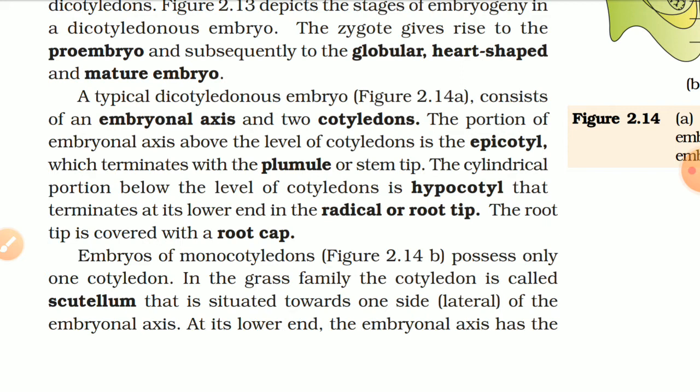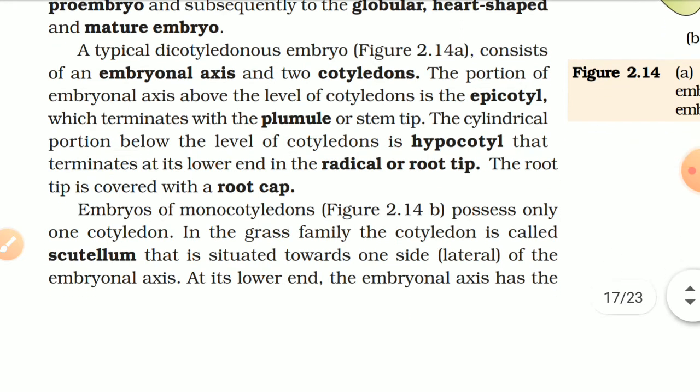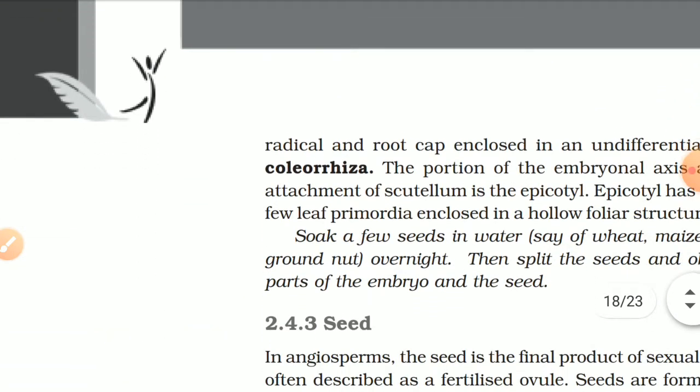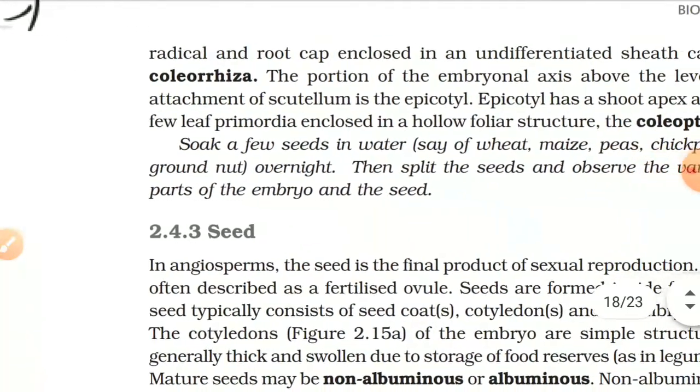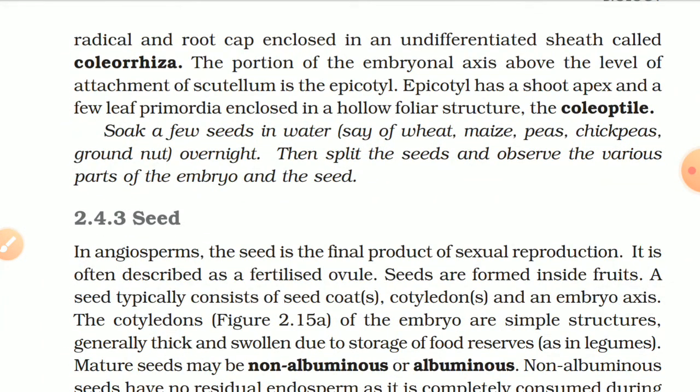Embryos of monocotyledons possess only one cotyledon. In the grass family, the cotyledon is called the scutellum, situated towards one side (lateral) of the embryonal axis. At its lower end, the embryonal axis has the radicle and root cap enclosed in an undifferentiated sheath called the coleorhiza. The portion of the embryonal axis above the level of attachment of the scutellum is the epicotyl, which has a shoot apex and a few leaf primordia enclosed in a hollow foliar sheath called the coleoptile.